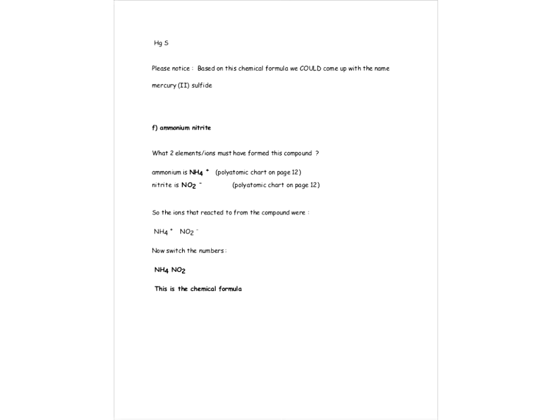The next compound is ammonium nitrite. Ammonium is NH4+ and nitrite — from page 12 — is NO2-. We've got a +1 and a -1. We switch the numbers, but since they cancel out, we don't even write the 1's. So the chemical formula is NH4NO2, ammonium nitrite.